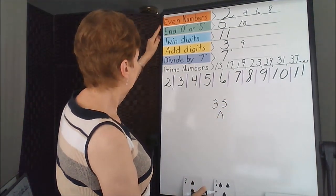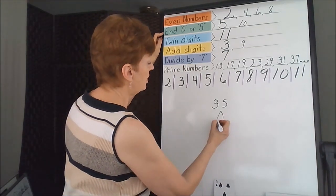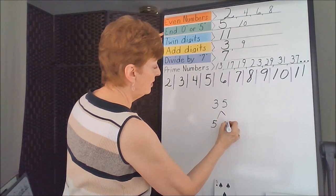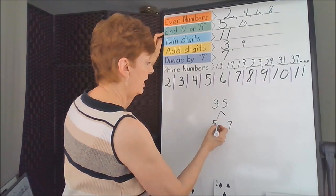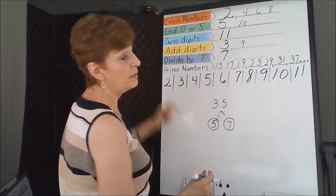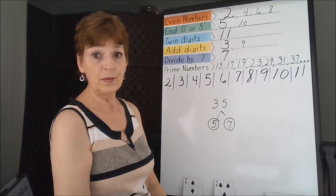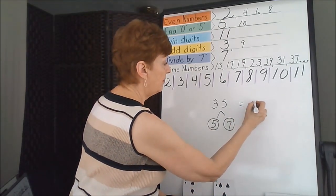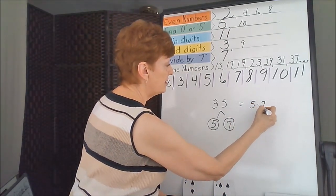35 is not even. It does end in 5, though, so we're going to use 5 as one of our branches. 5 times 7 is 35. 5 is prime, 7 is prime. The only way you can make 7 is 1 times 7. So the factors of 35 are 5 times 7.